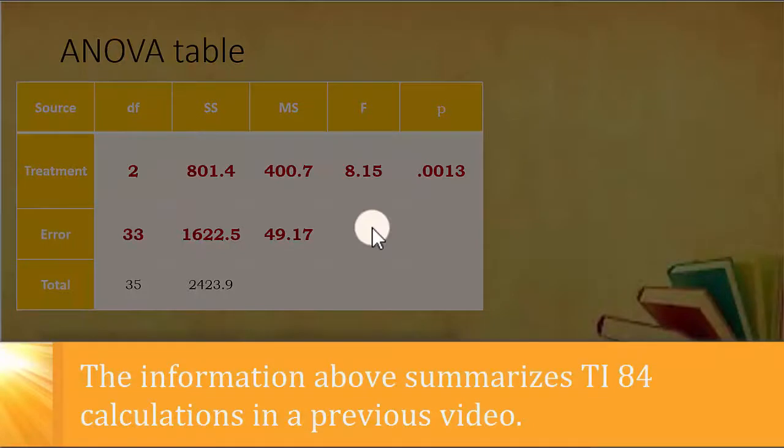Now I'm just going to organize the information from that analysis into an ANOVA table. So for the treatment I have two degrees of freedom with sums of squares of 801, mean square of 400.